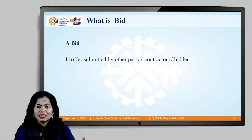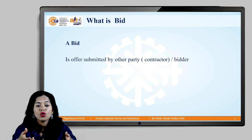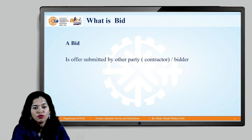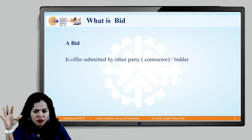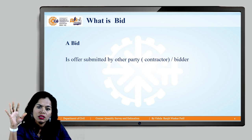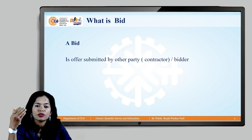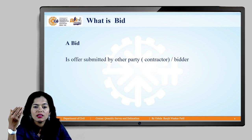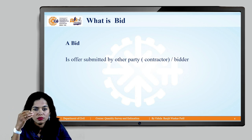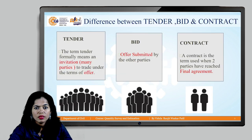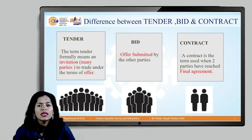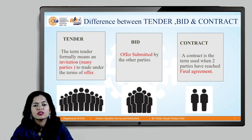When contractors take this tender document, all the information is in documented form. They thoroughly review every piece of information related to it and then submit their offer — that is, what price they are ready to work for that particular project. That offer, when submitted by an individual contractor, is called a bid. Now we will understand the difference between tender, bid, and contract.